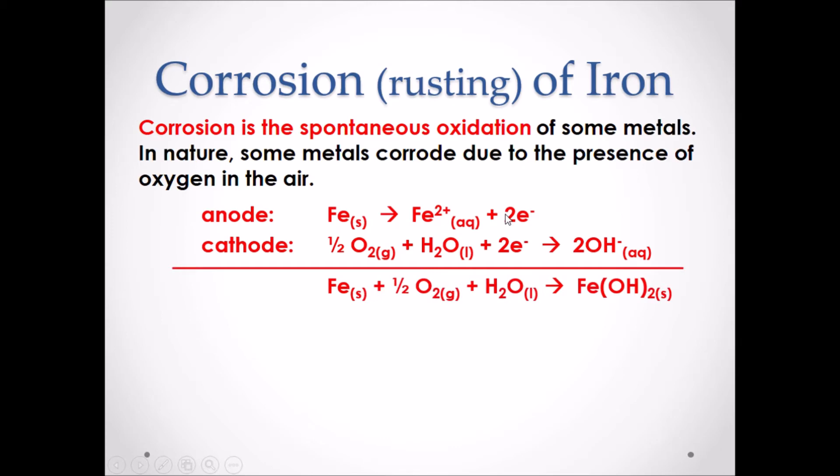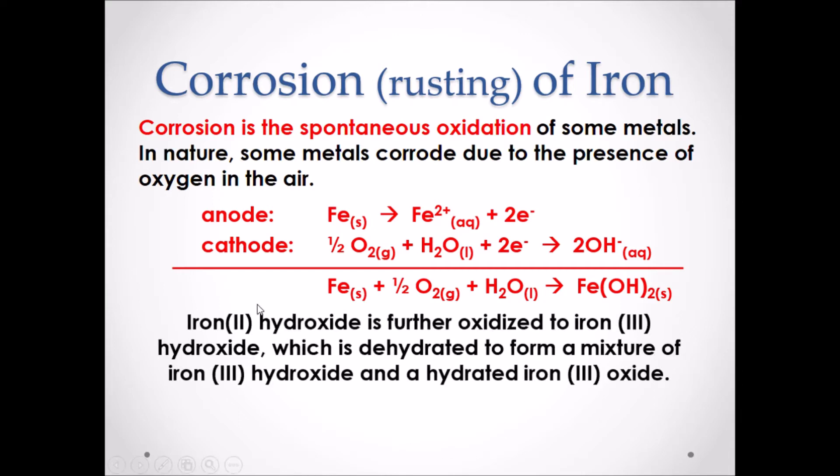If we put these two half reactions together, we have the chemical reaction of iron rusting. Iron 2 hydroxide, which is the product, is further oxidized to iron 3 hydroxide, which is then dehydrated to form a mixture of iron 3 hydroxide and a hydrated iron 3 oxide. The hydrated iron 3 oxide has the reddish brown color, which is known as rust.